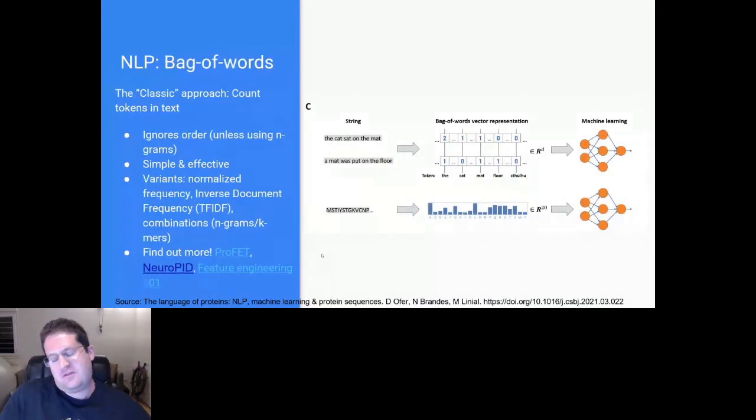We can still do dumb approaches. The bag of words, for example, works fantastically for a lot of tasks in NLP and in protein analysis, and we can also transfer various methods over: TF-IDF, K-gram, K-mers, shingles, and so on. We did a lot of this in Prophet in Europid, and these are the simpler classical approaches.